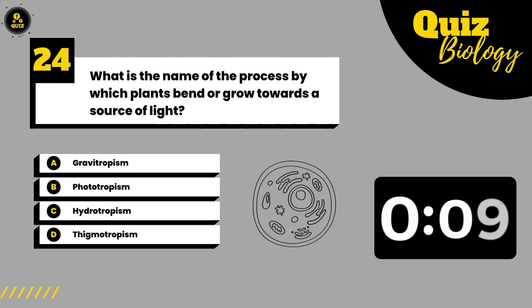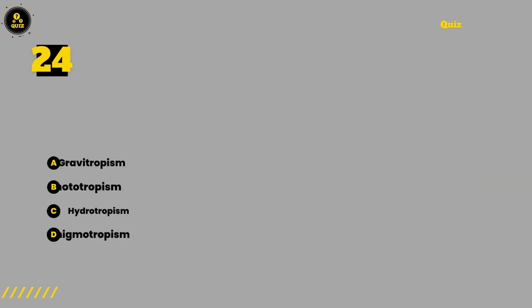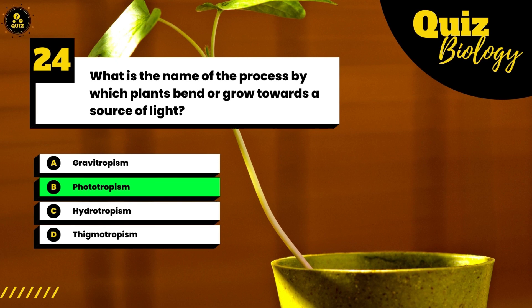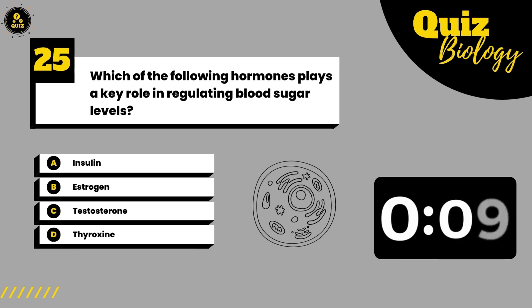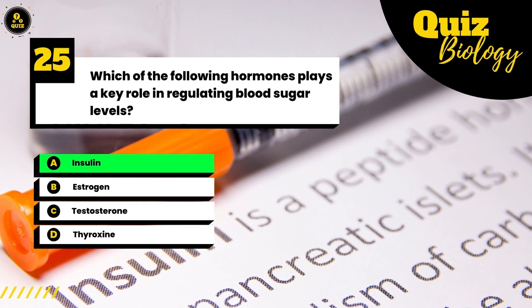What is the name of the process by which plants bend or grow towards a source of light?